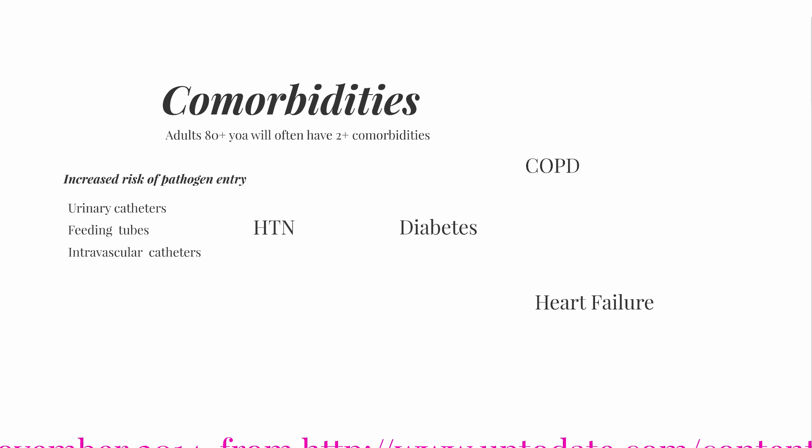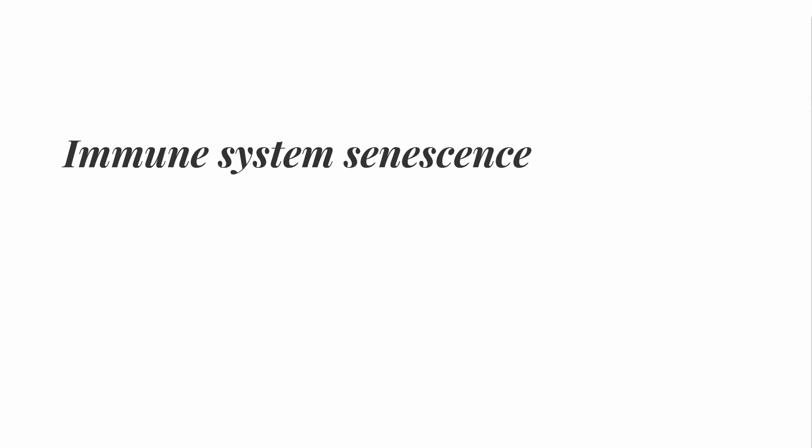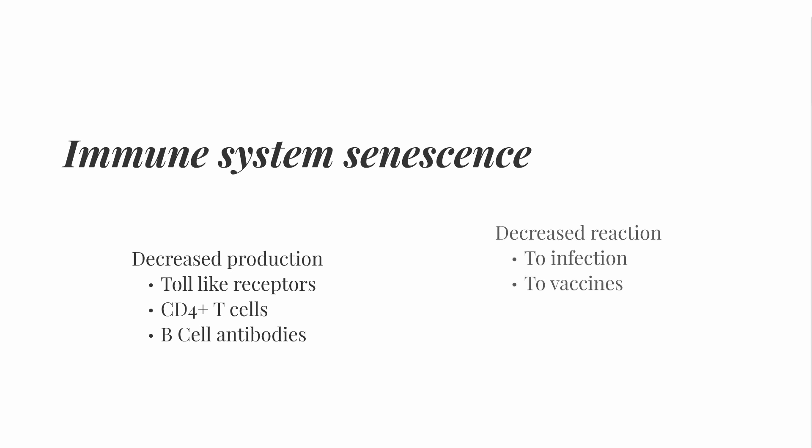Next up, we have immune system senescence. Because of the normal processes of aging, the immune system is both less productive and less responsive. It produces fewer immune cells, and the cells that it does have are less responsive to infection and vaccines. If you want to learn more, you're going to have to get a larger focus on immunology and aging.